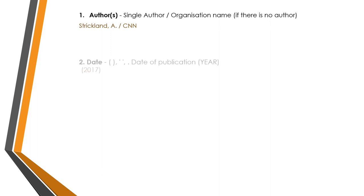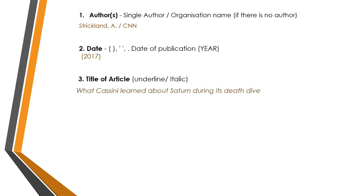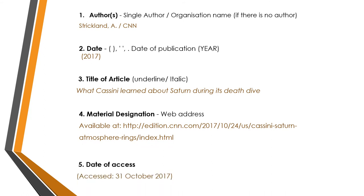Next, you need to include the date of publication, presented as the year the article is published. After that, the title of the article should be stated, followed by the material designation and the date you accessed the online article.